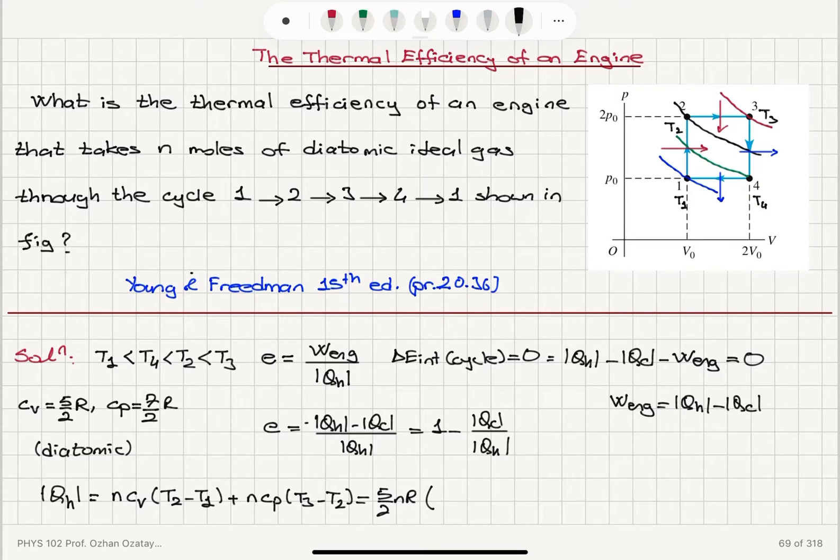What is temperature T2? It is 2P0V0 divided by Nr, because PV equals Nrt, minus, what is the temperature T1? It is P0V0 divided by Nr. And then, for the constant pressure process, 7 over 2R, so 7 over 2Nr is Cp. Then, I have the temperature 3, that is 2P0, 2P0, 4P0V0 divided by Nr. And, temperature T2, 2P0V0 divided by Nr. And, these Nr's will cancel, obviously.